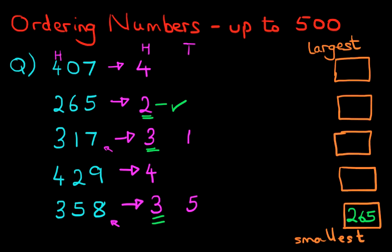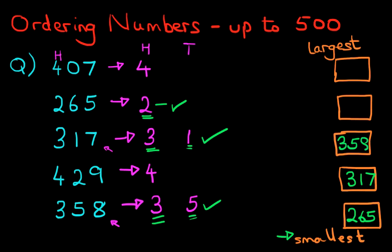Now which number is larger and which is smaller? The first thing we notice is that the numbers are different — one and five are different, they're not the same. Therefore we should be able to write both of these numbers down now. The smaller number is one, so three hundred and seventeen goes next. Don't forget the smallest is at the bottom — two sixty-five is already done. We've just added three hundred and seventeen, which leaves the five, meaning three hundred and fifty-eight.